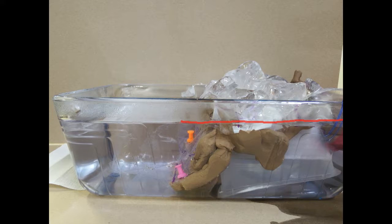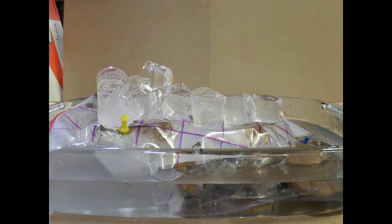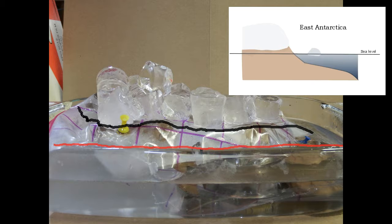In profile view, you can see the dome shape of the right hand tub. This represents West Antarctica. Here is the profile of the left tub. This landform represents East Antarctica.